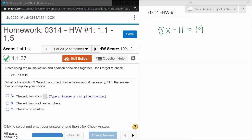All right, here we go. Question number one from our 0314 homework number one in MyLabMath. We have an equation, 5x minus 11 equals 19, and the objective is to solve for x.